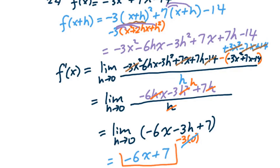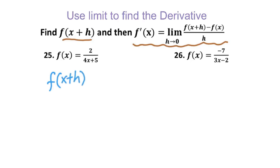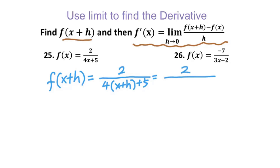This is the derivative for problem 22. Today's lesson is to use limits to find the derivative of rational functions. Find f(x + h) first, then use the formula to figure out the derivative. For problem 25, f(x + h) has every x replaced by x + h, giving us 2 over 4(x + h) + 5. Using the distributive property, the denominator becomes 4x + 4h + 5.